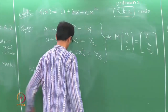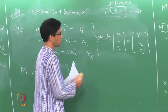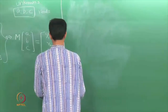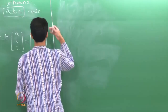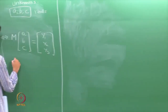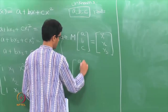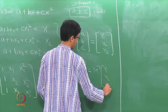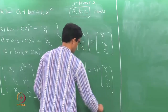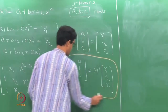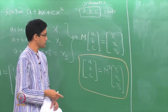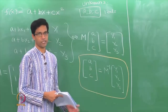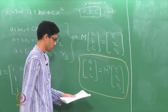The coefficient matrix M is the 3×3 matrix with rows (1, x₁, x₁²), (1, x₂, x₂²), (1, x₃, x₃²). The system becomes M times the vector (a, b, c) equals (y₁, y₂, y₃). We have rewritten our system of equations, and all we require is to multiply both sides by the inverse of M. Therefore the solution (a, b, c) is just M inverse multiplied by (y₁, y₂, y₃).